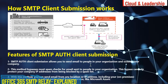Number one, SMTP authentication client submission allows you to send email to people in your organization and outside of your company. Number two, this method bypasses most spam checks for email sent to people in your organization — this bypass can help protect your company IP address from being blocked by a spam list. Number three, with this method you can send email from any location or IP address, including your on-premises organization's network or a third-party cloud hosting service like Microsoft Azure.